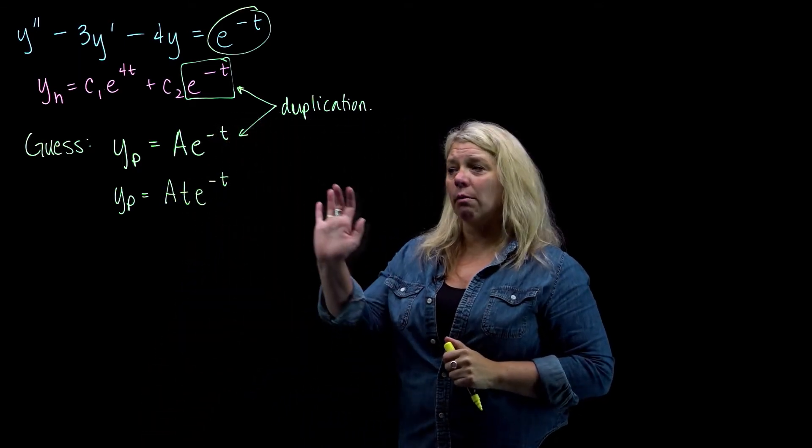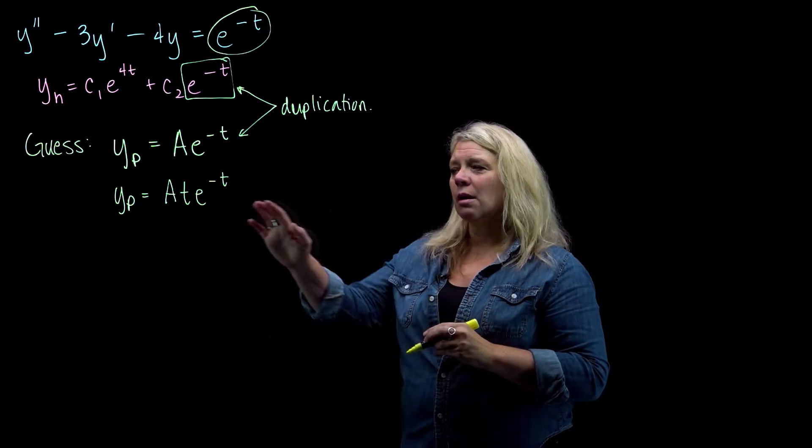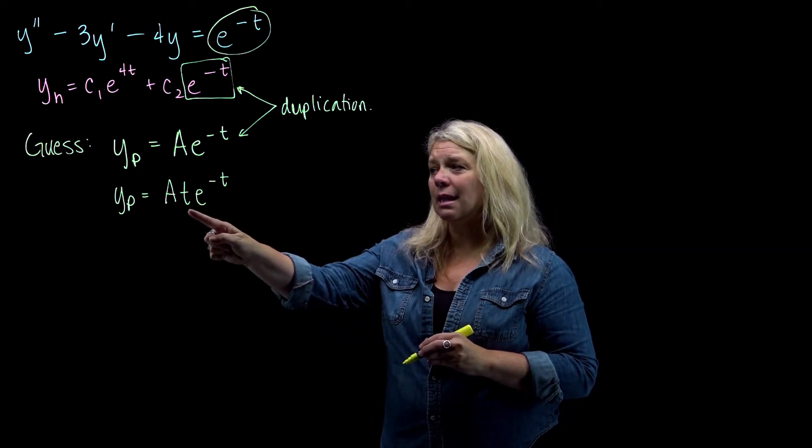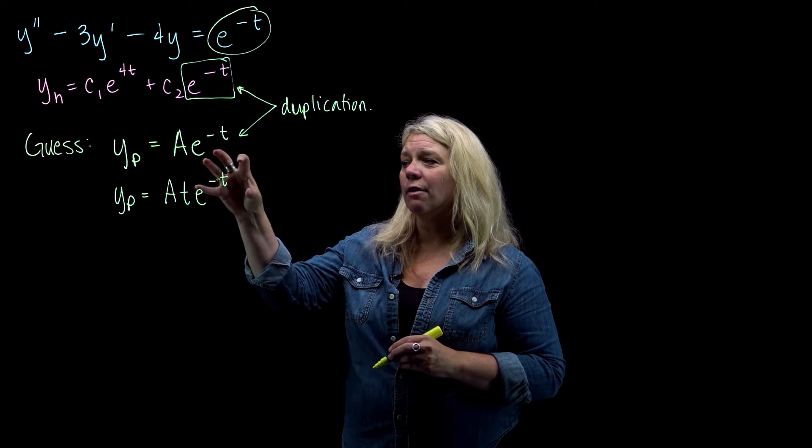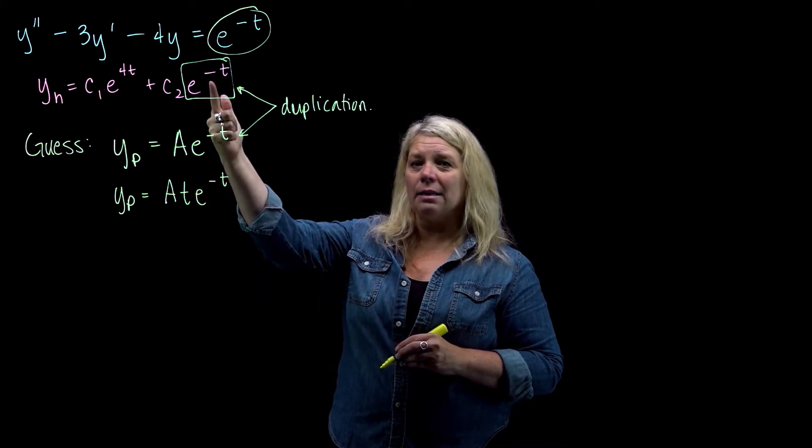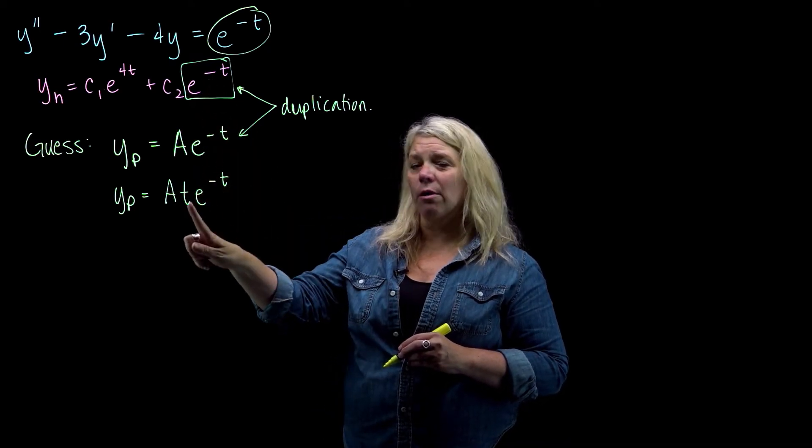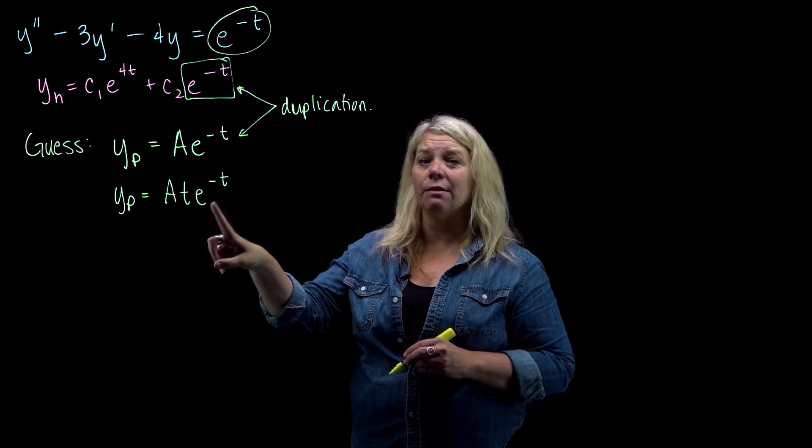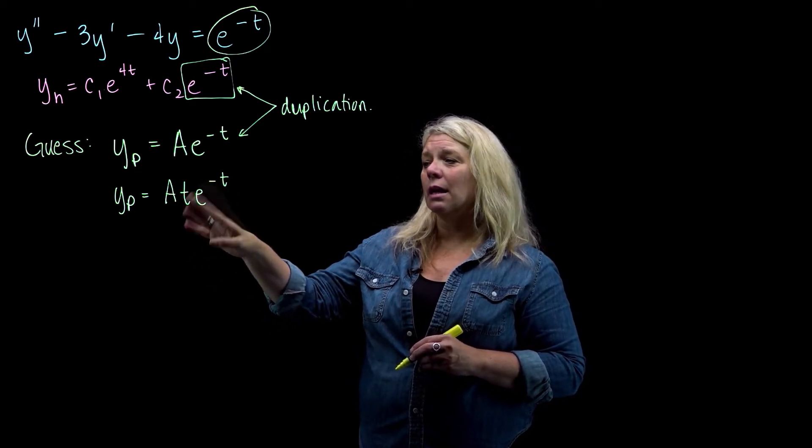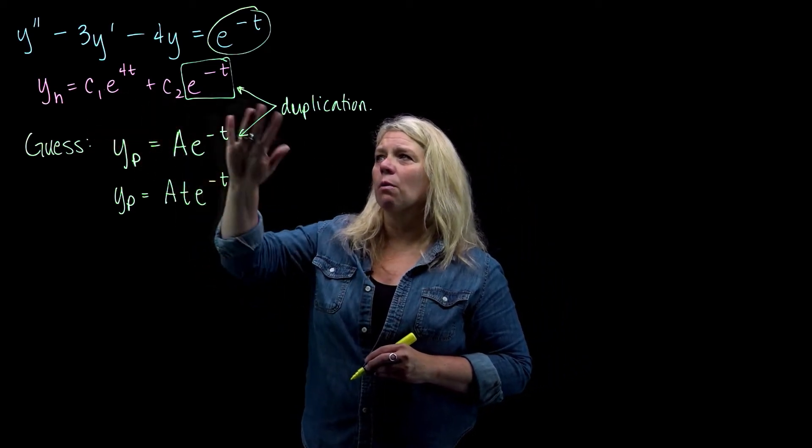We'll look at another example where we have to multiply by something different. But just multiplying by that t makes this function a different function than that e to the negative t. So the smallest power of t, in this case I multiplied by t to the first power, that gets you out of duplication with your y_h.